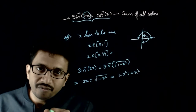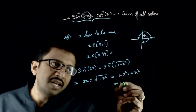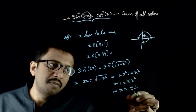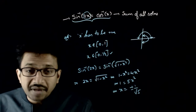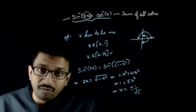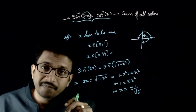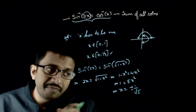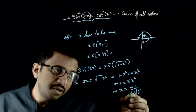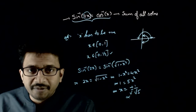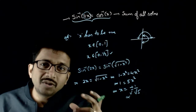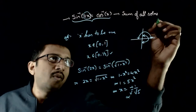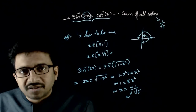Squaring both sides: 1 minus x squared equals 4x squared, which gives 1 equals 5x squared. So x equals plus or minus 1 by root 5. There are two solutions, but minus 1 by root 5 is negative and must be discarded. Only 1 by root 5 lies in the interval (0, 1/2), so there is effectively only one solution. The sum of all roots is 1 by root 5.